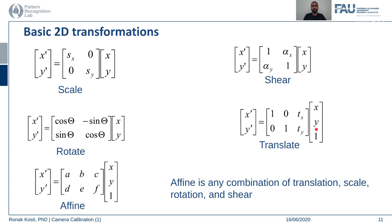The translation matrix is a concatenation of a 2×2 identity matrix with a column vector of translation in x and y directions. You can clearly see that x-prime can be represented as x plus some translation value in x, and similarly for y.